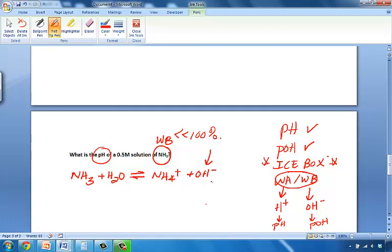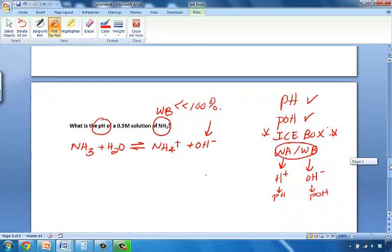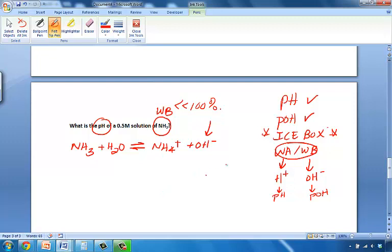First of all, notice that we are going to be solving for hydroxide ion. Hydroxide ion is going to give us pOH and ultimately pOH will give us pH. So let's set up our ICE box: I for initial, C for change, and E for equilibrium. We're asked what is the pH of a 0.5 molar solution of ammonia?